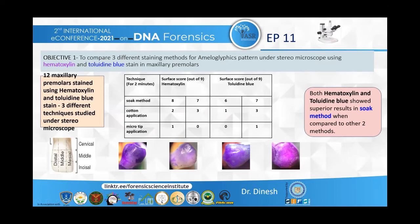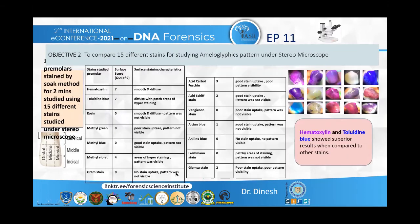Each staining technique was applied for two minutes: the soak method, where the tooth was soaked in the stain; the cotton method, where cotton application was done; and the microtip application. A surface score out of nine was given for each premolar. Both hematoxylin and toluidine blue showed superior results with the soak method when compared to the other two methods.